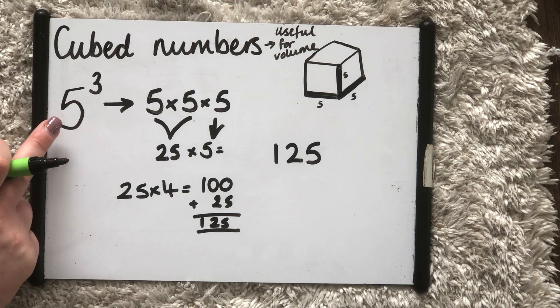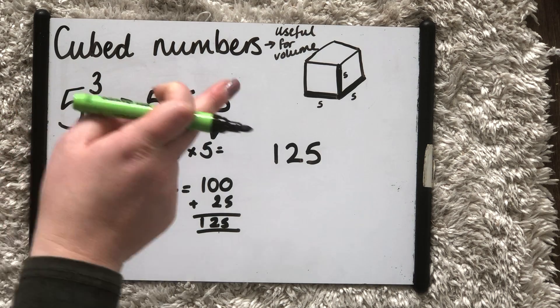So 125 is my cubed number. That is my answer to 5 cubed: 5 times 5 times 5.